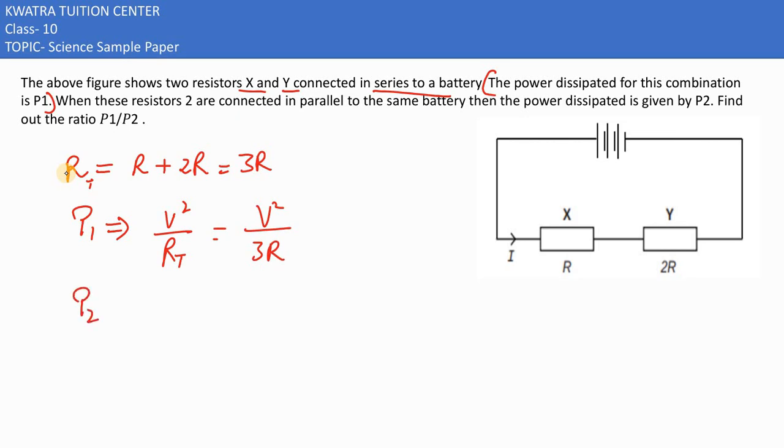Power 2, when our combination is in parallel. If we take total resistance, then which formula we will take? 1 by RT equals 1 by R plus 1 by 2R. This would be like 2R, and this would be 1, so this would be 3 by 2R. The value in parallel, RT would be equal to 2R by 3.